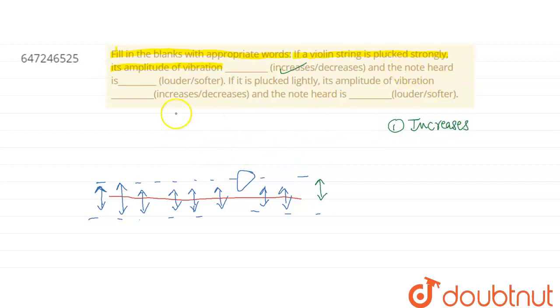And the note heard is dash, louder or softer. So basically, we need to know a relation between amplitude and intensity. Intensity means loudness.